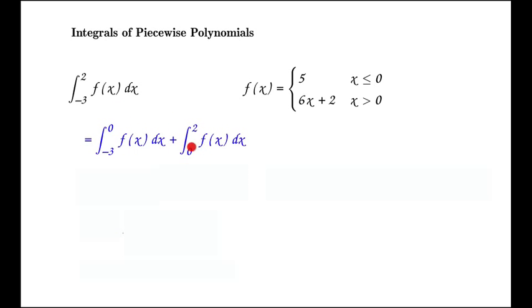We chose 0 as the intermediate point because 0 is where the function breaks, and the function has a different value for x less than 0 than for x greater than 0. So whenever you have a piecewise function and want to find its definite integral where the interval of integration contains this breakpoint, you have to split it into several pieces.